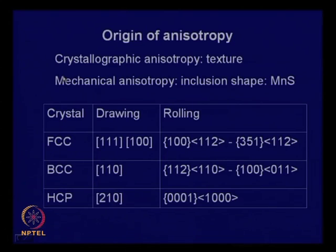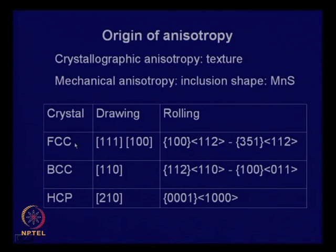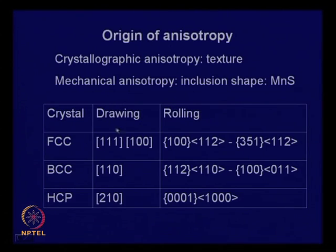Why does crystallographic anisotropy develop? Deformation is determined primarily by slip and twinning, though the bulk of deformation in metals occurs through slip. Different crystal structures affect the texture obtained, as does the deformation process — drawing gives one kind of effect while rolling gives another.